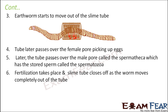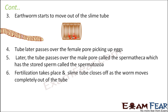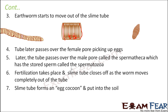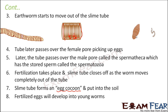The earthworm has dropped both the female sex cells and the sperms into the tube, so the eggs and sperms are no longer in the earthworm's body. The slime tube closes on both ends as the worm moves completely out, forming a structure known as an egg cocoon. Inside this cocoon, fertilization happens and a small worm starts forming — these fertilized eggs later develop into young worms.